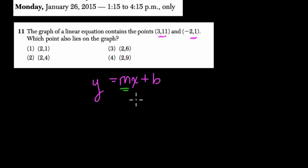The first thing I'm going to do is find the slope, the m value. To do that, I subtract the y values: 1 minus 11, delta y, over delta x, the difference of the x values, negative 2 minus 3.